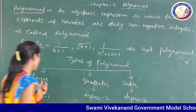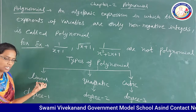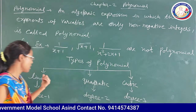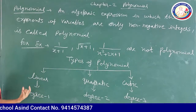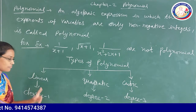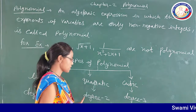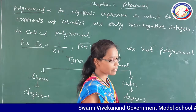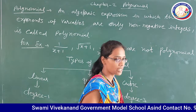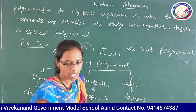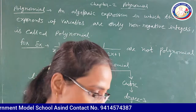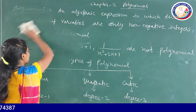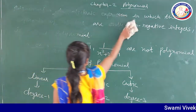There are three types of polynomials: first, linear polynomial; second, quadratic polynomial; third, cubic polynomial. A linear polynomial has degree one, a quadratic polynomial has degree two, and a cubic polynomial has degree three. Degree means the highest power of the variable — that is called the degree of the polynomial.